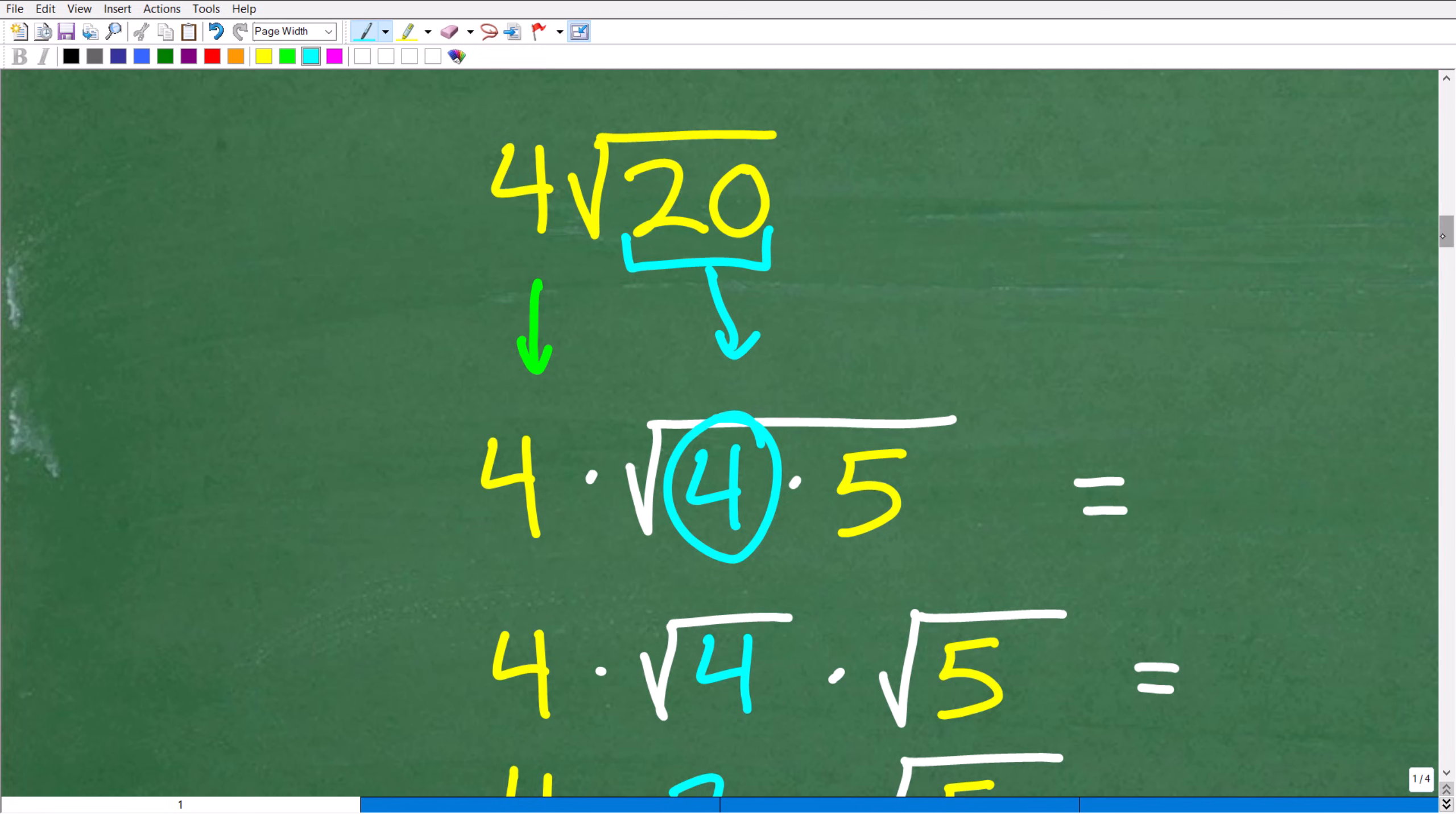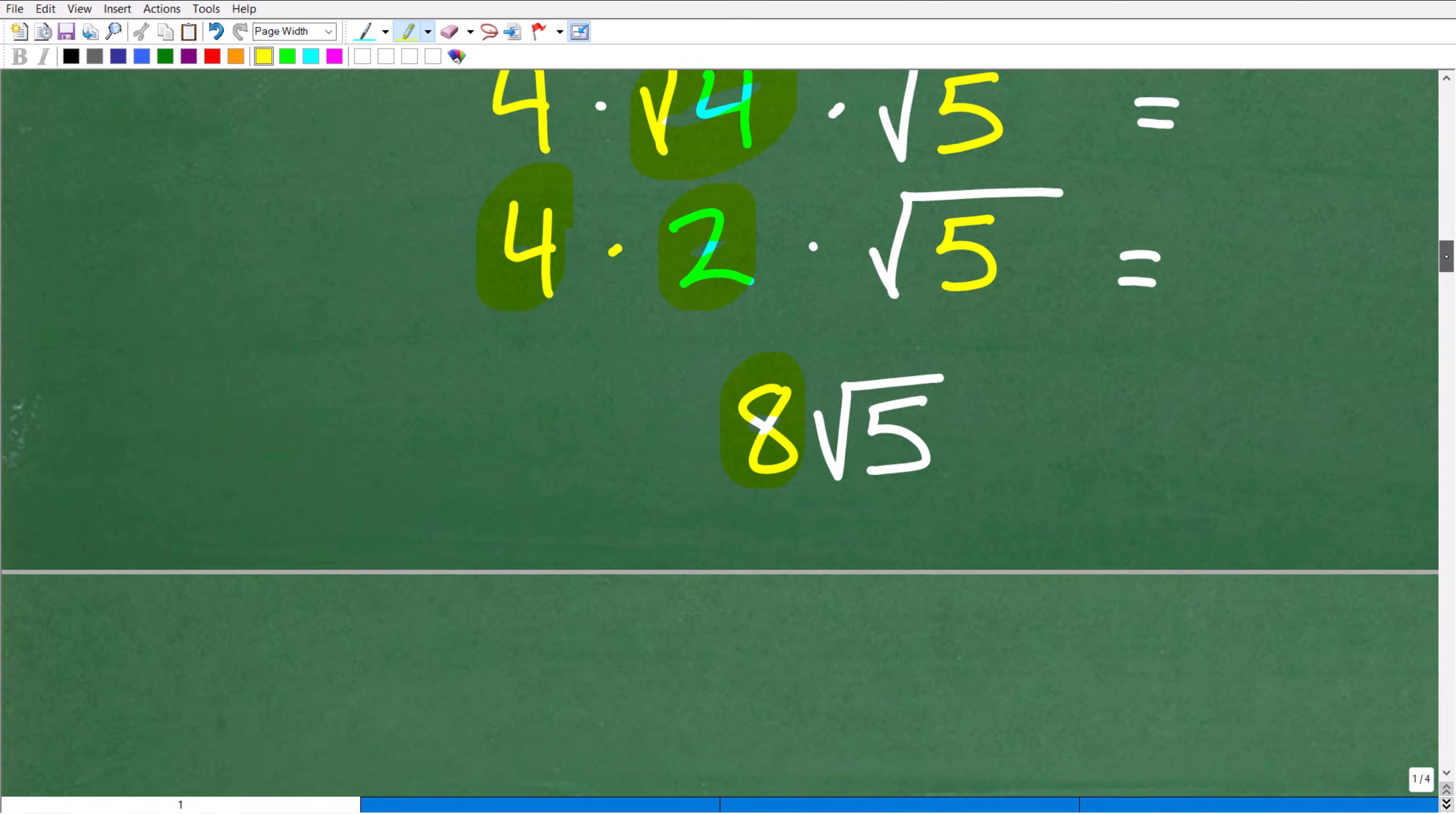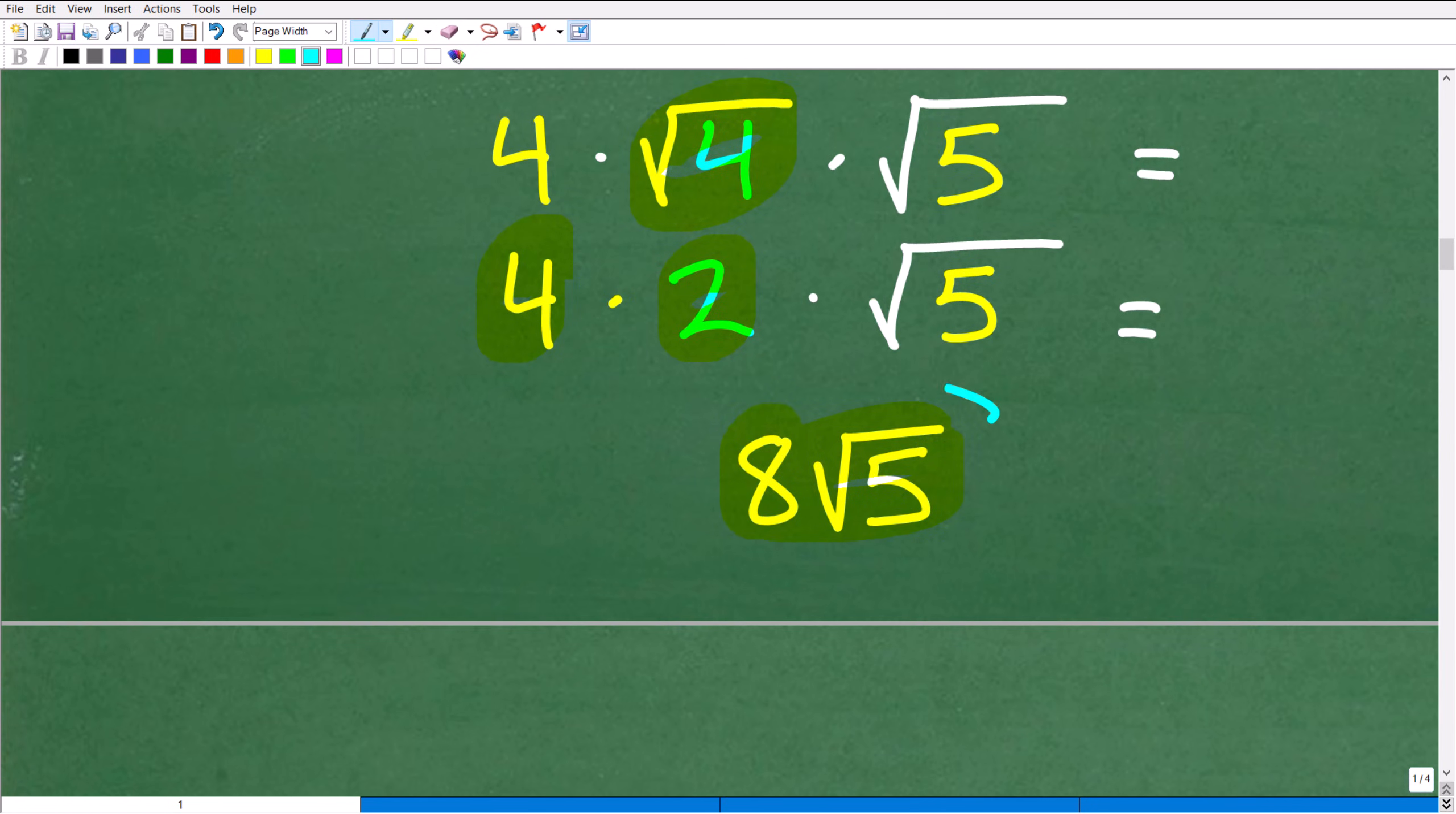So now we're going to go ahead and break up these individual square roots. So the square root of 4 times the square root of 5. Again, the square root of 4, that is a nice, beautiful, perfect square factor. That's going to be 2. So now we have 4 times 2, which is 8 times the square root of 5. And this is the fully simplified answer.